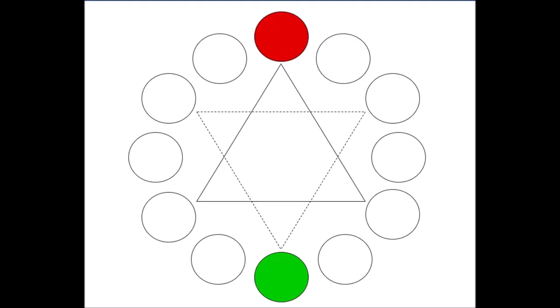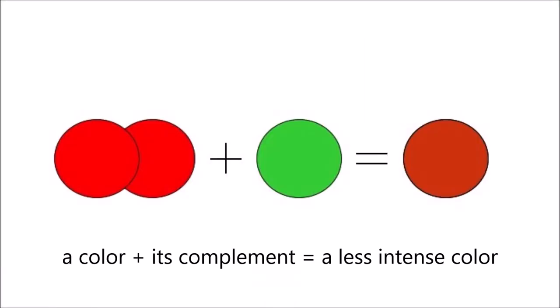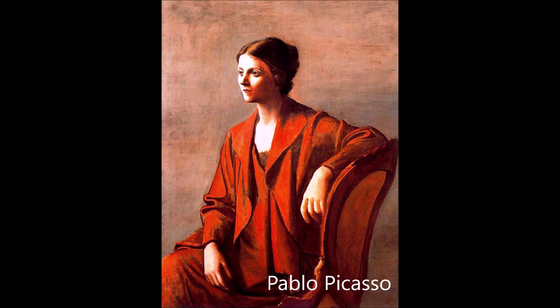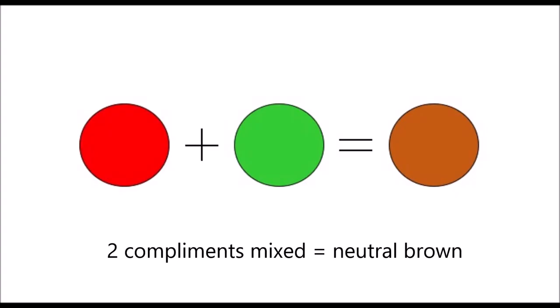You can also neutralize the brightness of a color by mixing its complement or opposite. For example, a small amount of green mixed with red will allow the red to retain its color identity, but it will change the intensity or brightness of the color. If you mix equal amounts of two complements, such as red and green, you will create a neutral brown.